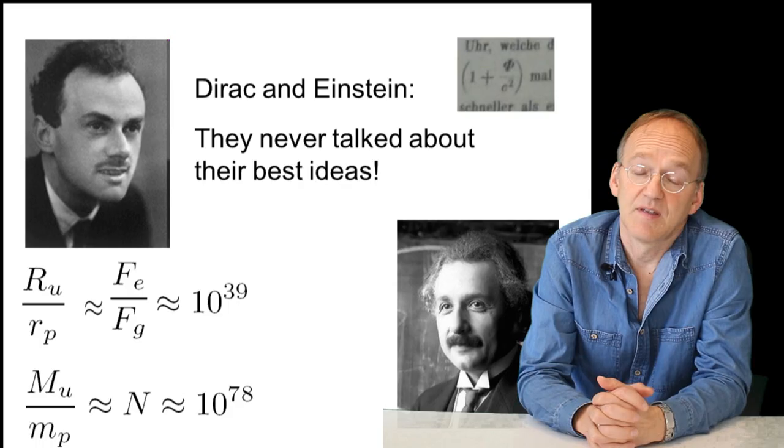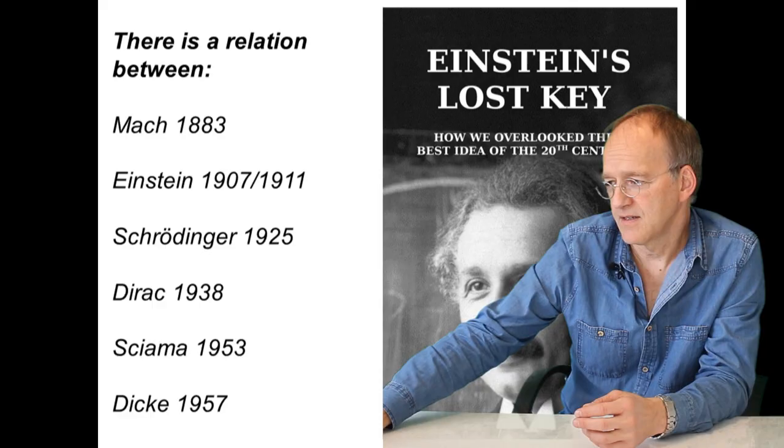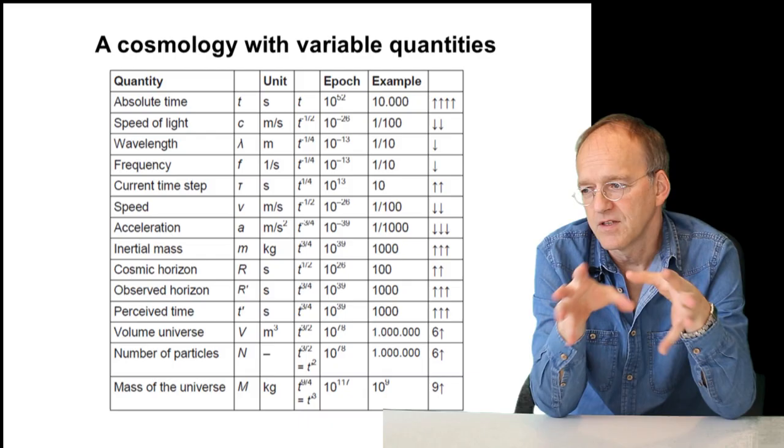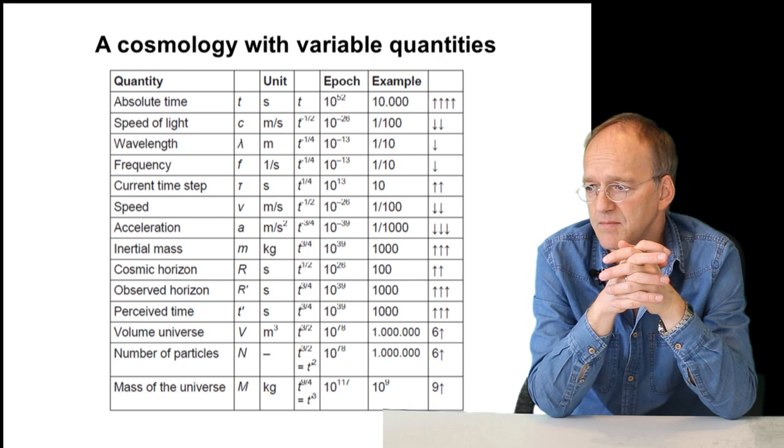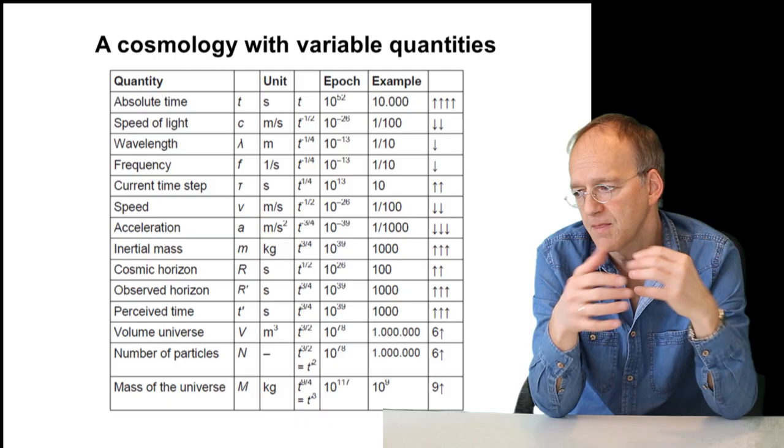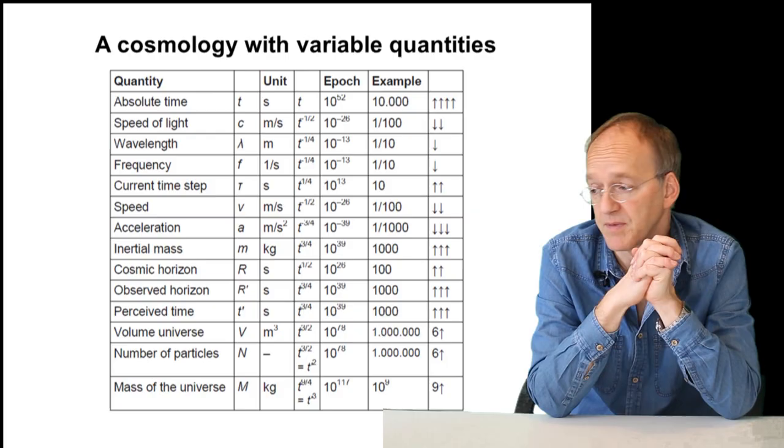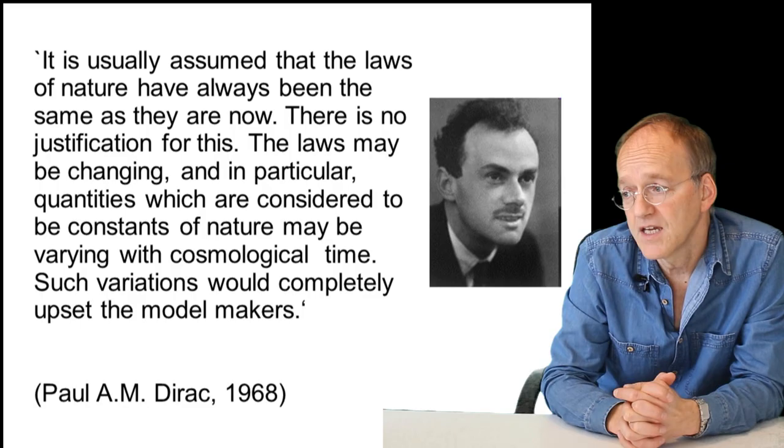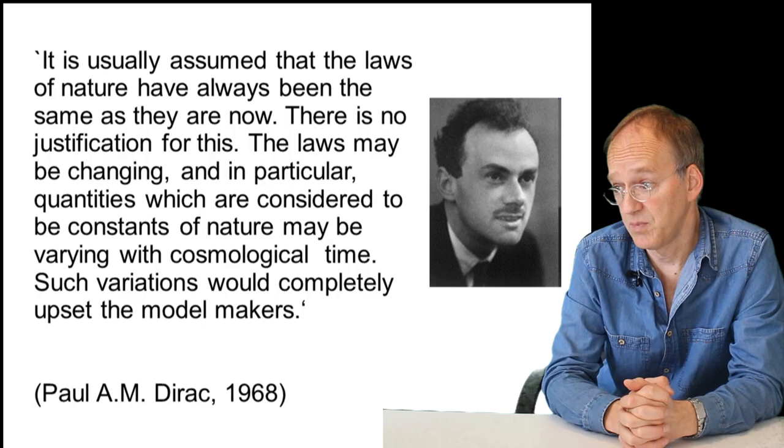There is a book about this stuff, but the essential point here is that you have a system of variable quantities that might govern the laws of nature. You can set up a consistent system of speed of light, wavelength, frequency, and so on. All is changing and it's all consistent with this hypothesis of large numbers by Dirac. Dirac also explicitly said that it is usually assumed that the laws of nature have always been the same as they are now. There is no justification for this. The laws may be changing, and in particular quantities which are considered to be constants of nature may be varying with cosmological time. Such variations would completely upset the model makers.